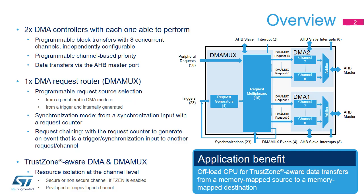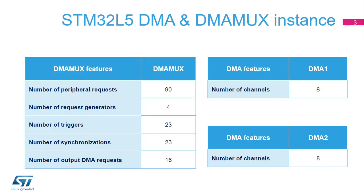Synchronization mode is available from a synchronization input with a DMA MUX request counter. Request chaining uses the DMA MUX request counter to generate an event that serves as an input trigger or synchronization to another request or channel. TrustZone-aware DMA and DMA MUX provide resource isolation at the channel level — secure or non-secure channel if TZEN is enabled, and privileged or unprivileged channel. There are 90 peripheral requests, 4 DMA MUX request generators, 23 triggers and synchronization inputs, and 16 DMA requests (8 per DMA controller).